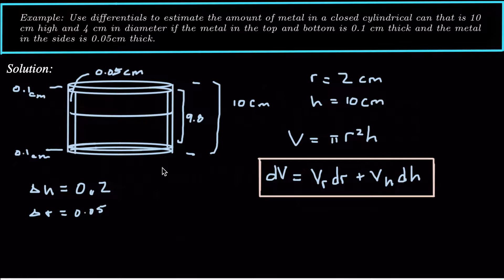Alright, so now we say okay, the r is the radius of the cylinder and that's 2 centimeters because the diameter is 4 centimeters. The height of the cylinder is 10 centimeters. Now what we're going to use to estimate the volume is the volume equation. So the volume equation of a cylinder is V equals pi r squared times h. The base is pi r squared, the height is h. So multiply those two together, we get the volume. So area times height for a cylinder gives you the volume.